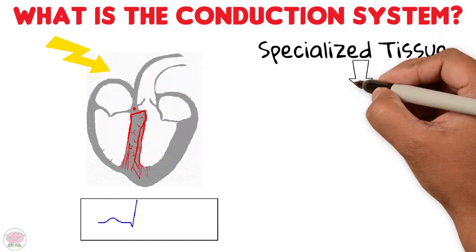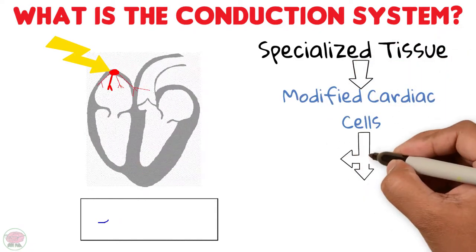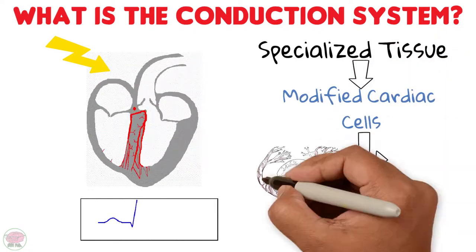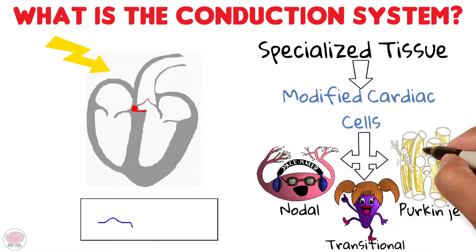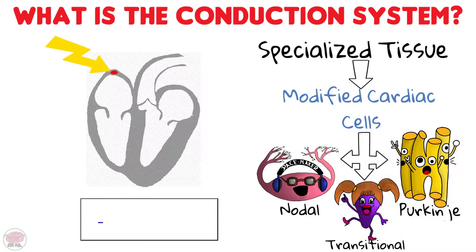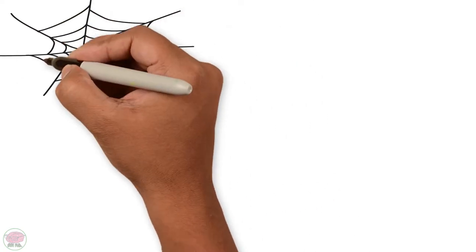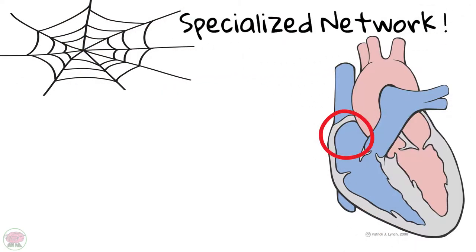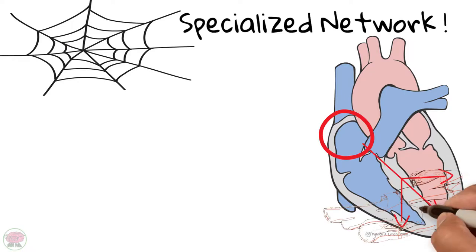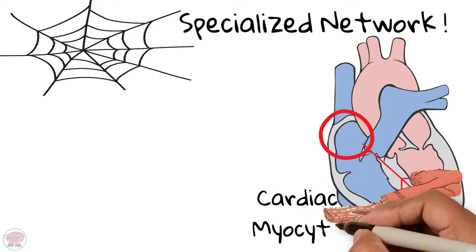This impulse-generating tissue is actually made up of modified cardiac cells that include nodal cells, transitional cells, and Purkinje cardiomyocytes. These cells are organized in specific structures that form a network originating at the right atrium and traveling down into the ventricles, distributing to every last cardiac muscle cell, which are called cardiac myocytes.